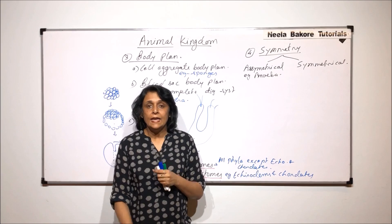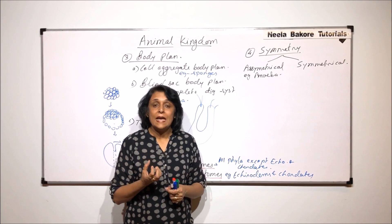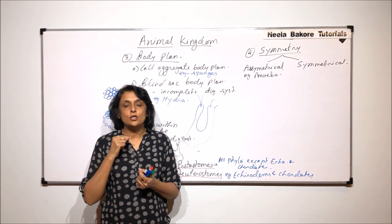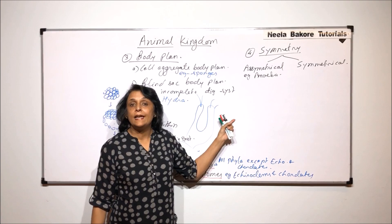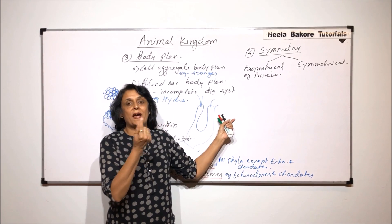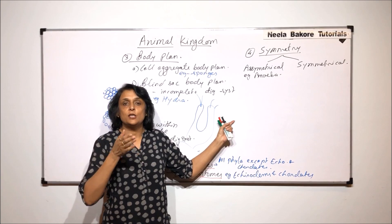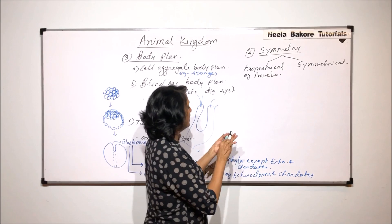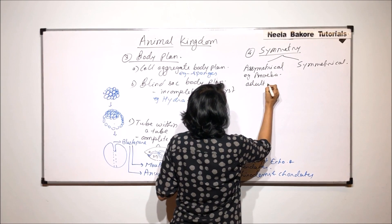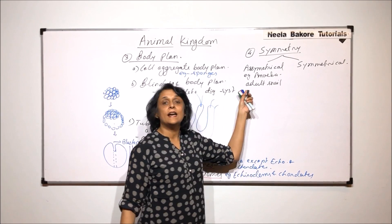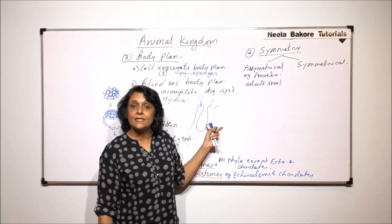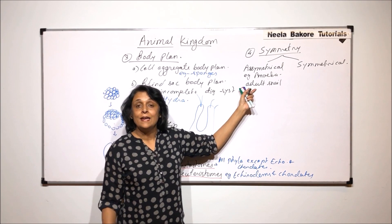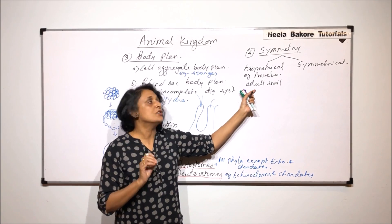Adult snails are also asymmetrical. When we see a snail, it has a mucus-like body and a spirally coiled shell. As the snails grow, their body grows inside that spiral shell. If you cut that spiral shell, you will never get two equal halves. We specify adult snails because the larval stages of snails are bilaterally symmetrical — so we must specify when the shell is formed and the animal is inside it.